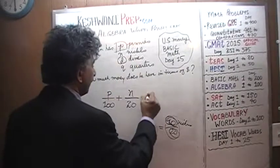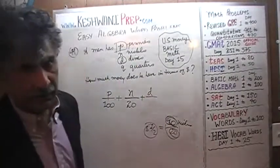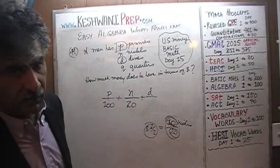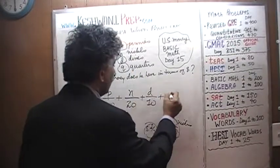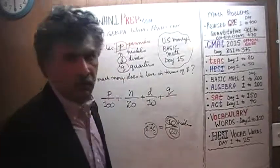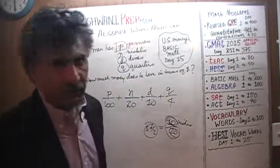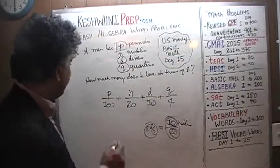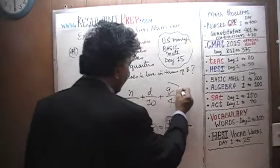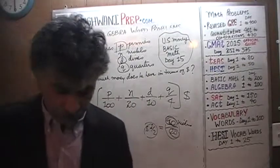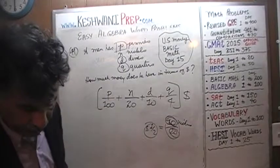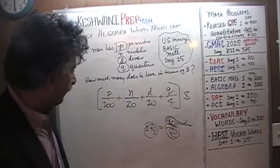Similarly, we have d dimes, and since there are 10 dimes in a dollar, you divide it by 10. And then we have q quarters. We need to divide that by 4, because that's how many quarters make up a dollar. That's it. We're done. That's your answer. This is how many dollars we have. We were being asked to convert this amount into dollars, and we have done so.